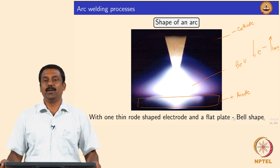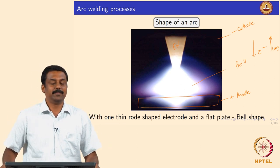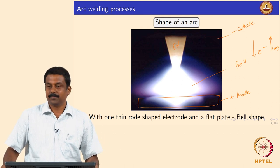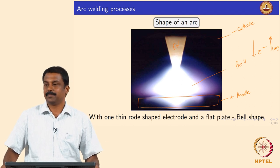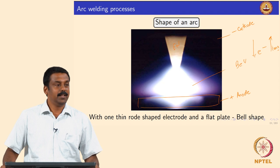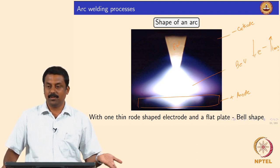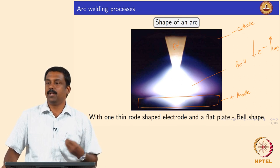For welding steel you can use DC. With a consumable welding process, you can make the consumable positive or negative depending on the penetration you need. In a non-consumable welding process, it is always advisable to use electrode negative so that you do not superheat or erode the electrode.